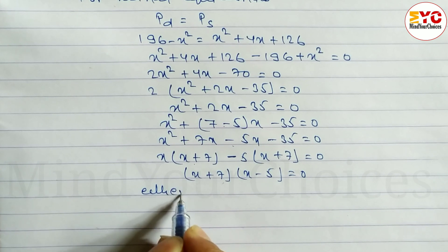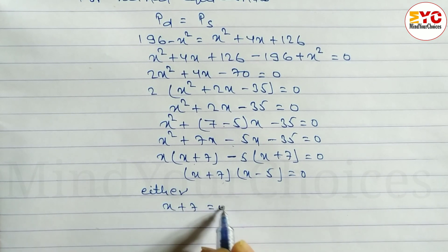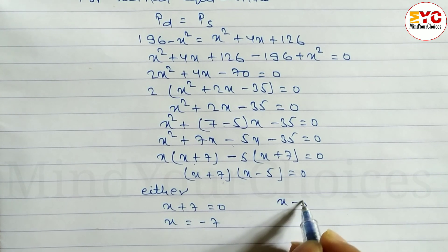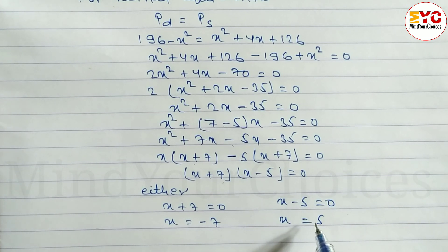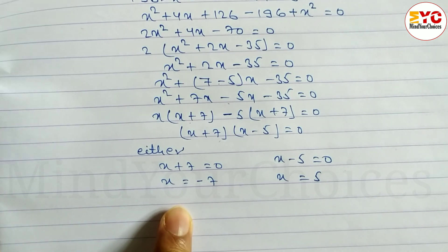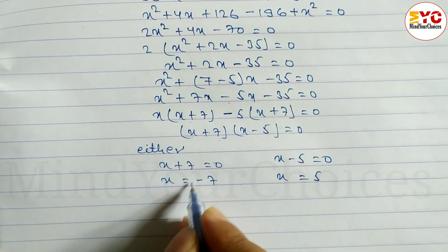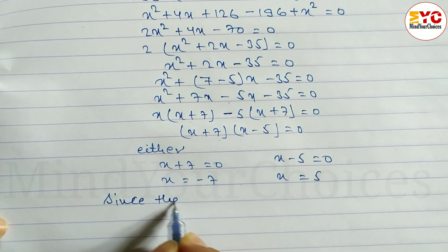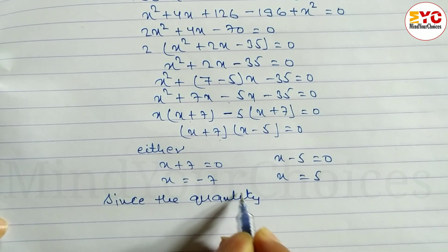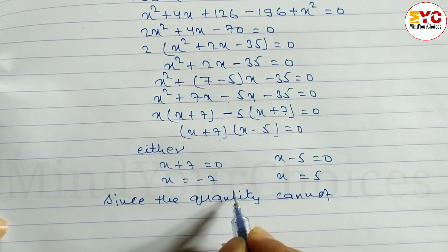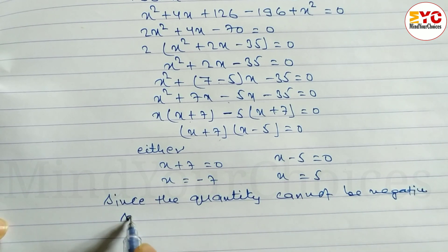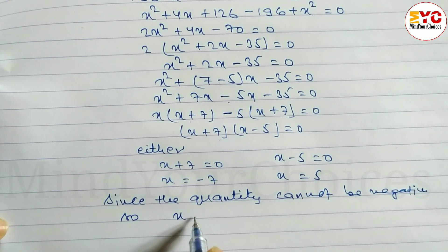Either x plus 7 equals 0, giving x equals minus 7, which is not possible. Or x minus 5 equals 0, giving x equals 5. Since the quantity cannot be negative, we reject x equals minus 7, so x equals 5.